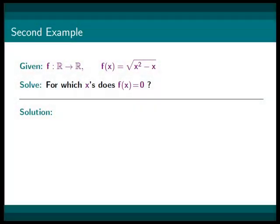In our second example, we have a function that also has its domain and range as the set of all real numbers. And the function is f(x) equals square root of x squared minus x. We are asked to solve for which x's does f(x) equal 0.